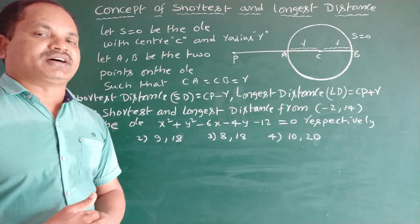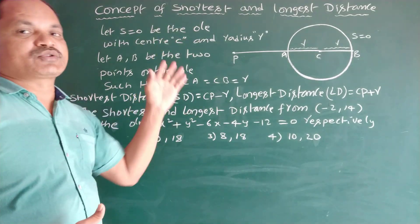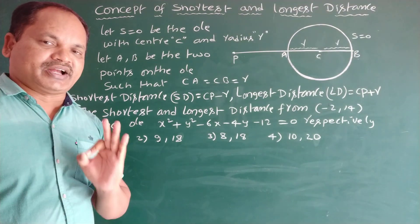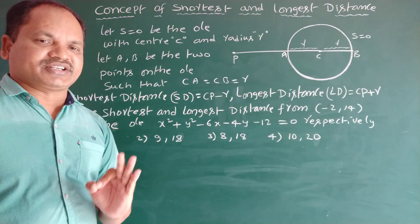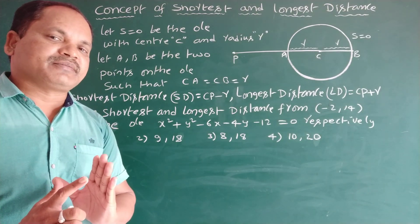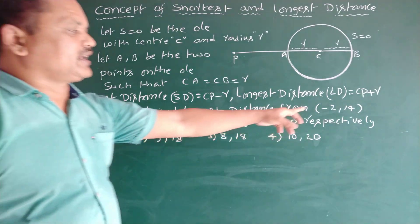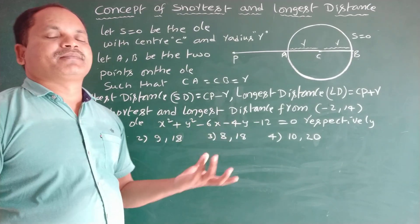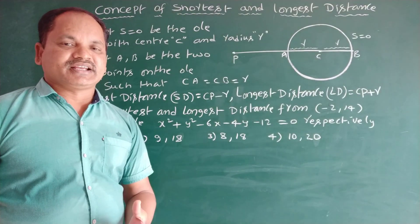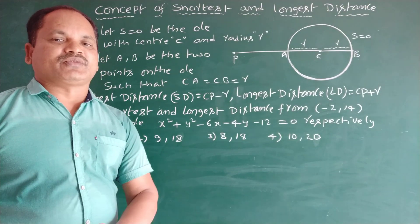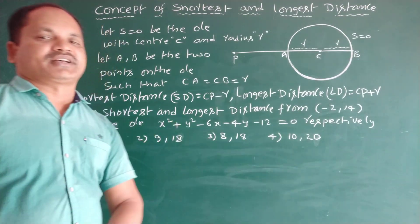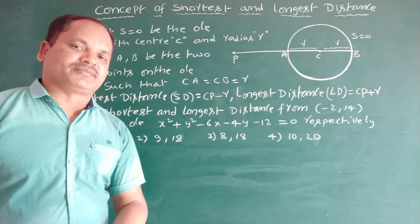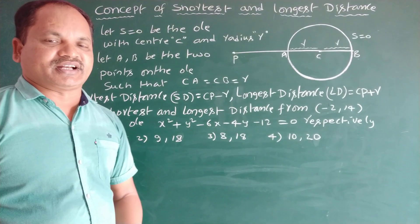We need to identify the shortest and longest distance. First, we must confirm the point lies outside the circle. Substituting (-2, 14) into the circle equation gives a positive value, so S11 is positive. If S11 greater than 0, the point lies outside the circle, so there exists a shortest and longest distance.